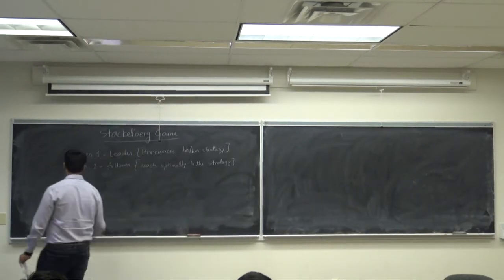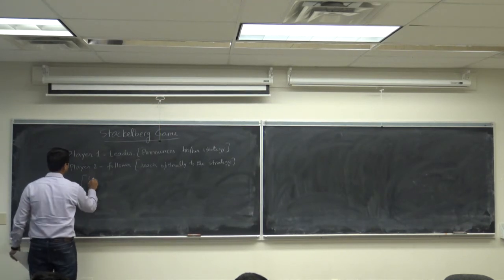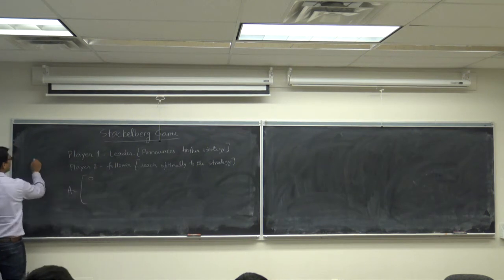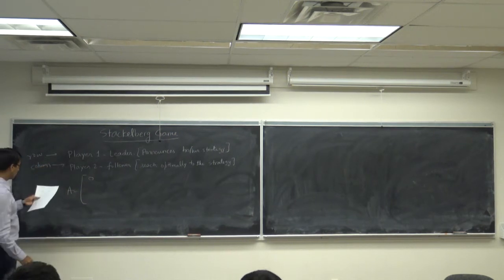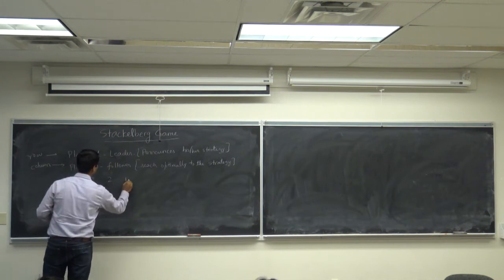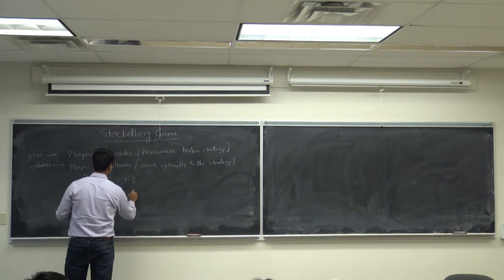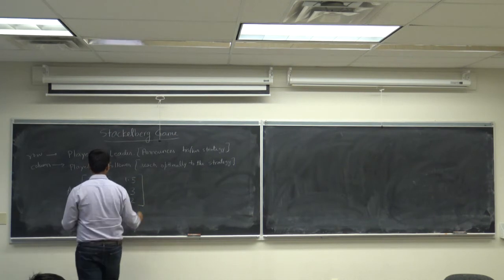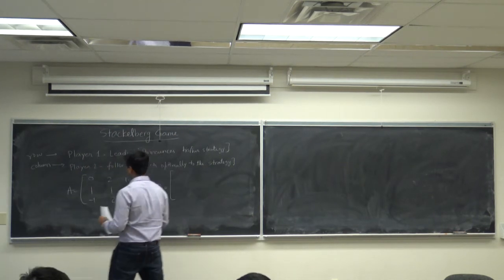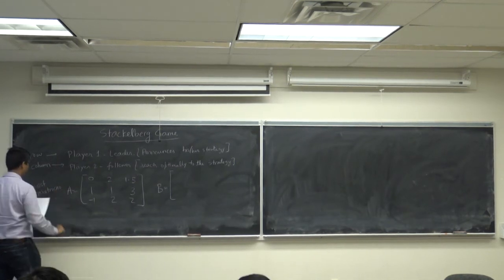Let us look at Game A. Player one is the row player and player two is the column player. The cost matrix A is: top row — 0, 2, 1.5; middle row — 1, 1, 3; bottom row — minus 1, 2, 2. These are cost matrices.